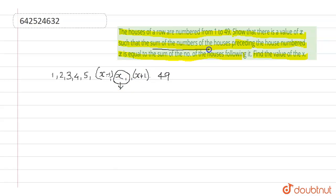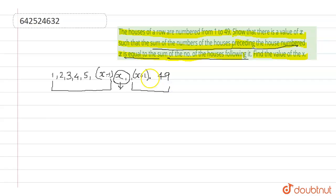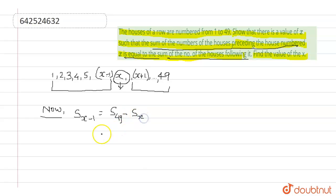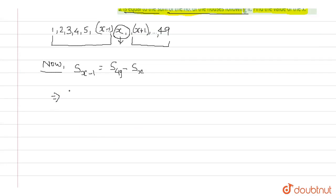The sum of the numbers of the houses preceding the house numbered x is equal to the sum of the numbers of the houses following it. So we can write: S of (x minus 1) is equal to S of 49 minus S of x.